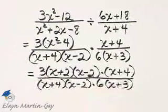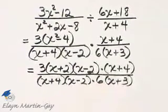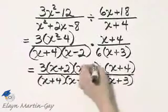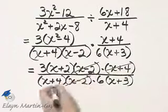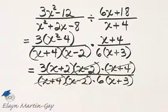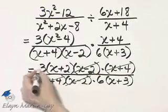Now we've completely factored. We can look for any common factors. There's a common factor of x minus 2 in numerator and denominator, a common factor of x plus 4, and then 3 and 6 have a common factor of 3.